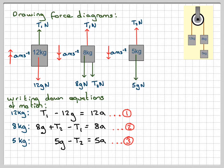Now, we could make T1 and T2 the subject. However, it's far easier if we just add these three equations together, because when we do that, T1 plus minus T1 will give nothing. And then T2 plus minus T2 will give no T. So we've eliminated T. We'll just have an equation in a. So that's going to give me 8g plus 5g minus 12g.